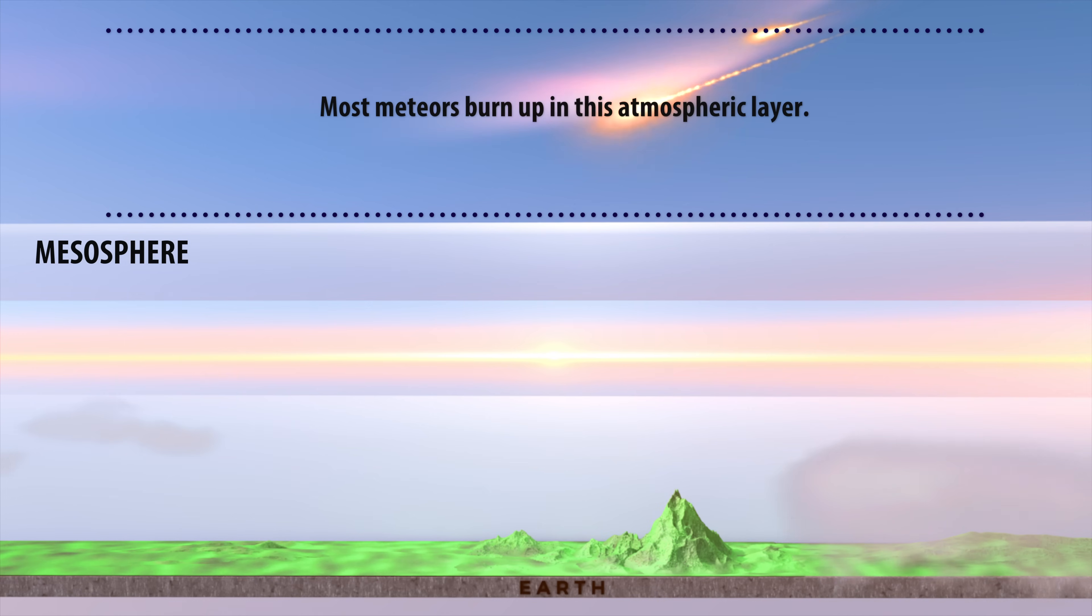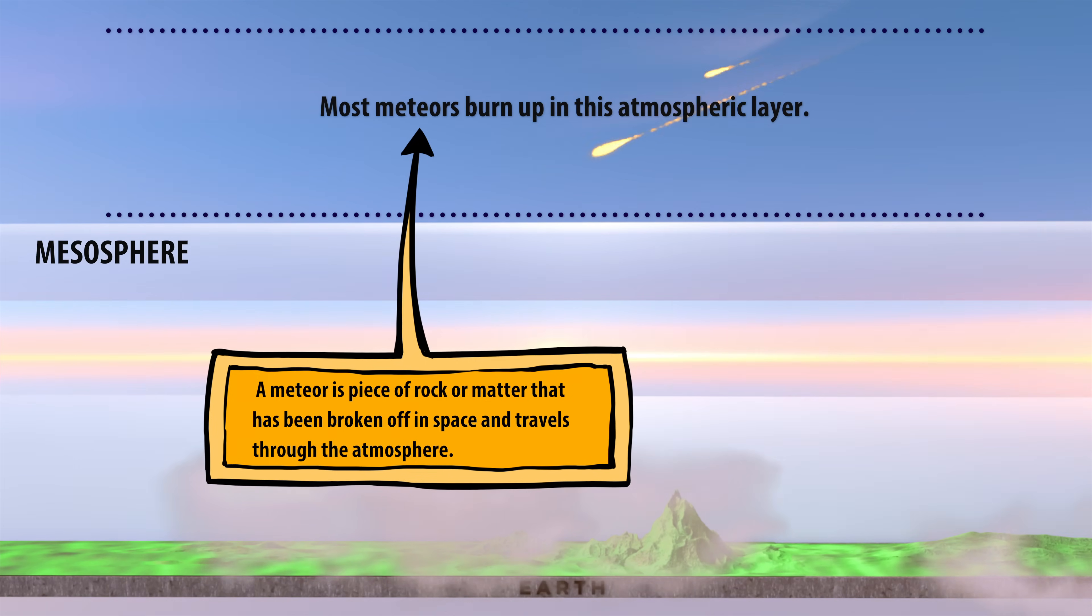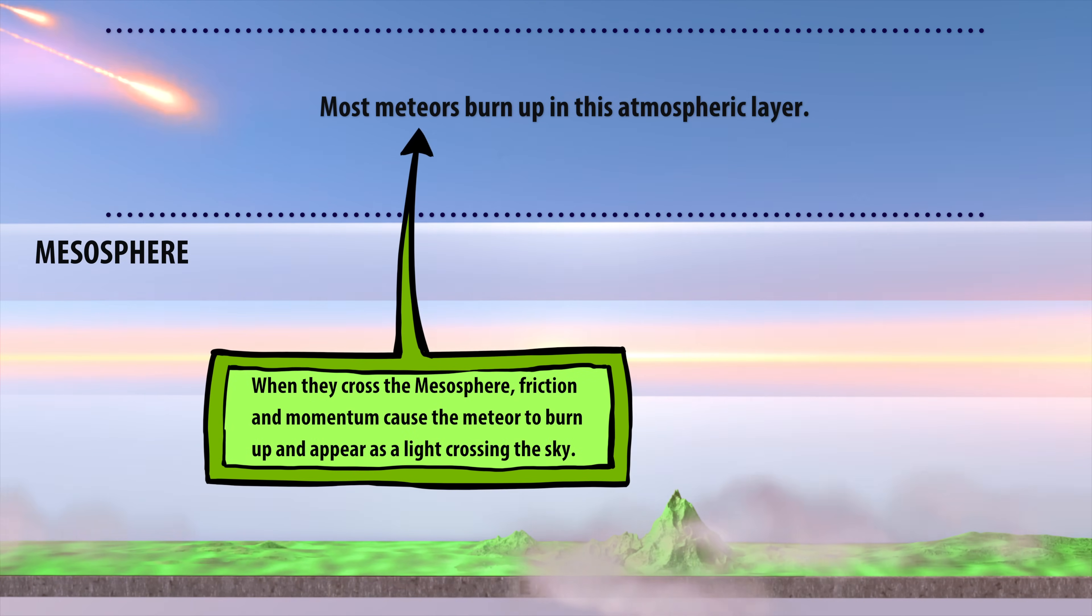Most meteors burn up in this atmospheric layer. A meteor is a piece of rock or matter that has been broken off in space and travels through the atmosphere. When they cross the mesosphere, friction and momentum cause the meteor to burn up and appear as a light crossing the sky.